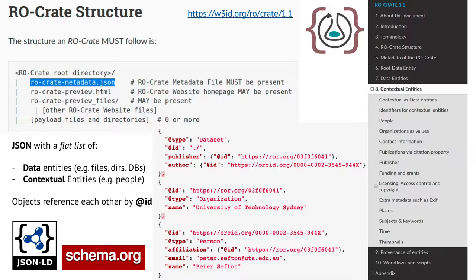A provenance of how things came to be — maybe you used a particular instrument to read something, a luminol machine for instance, could be listed in there. And of course, what is important for us today is also workflows. Things that process the data should also be in the RO-Crate.